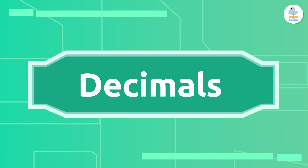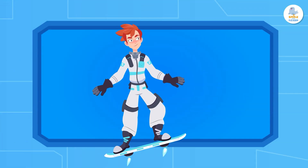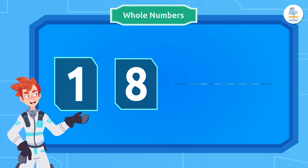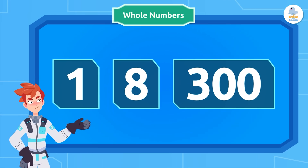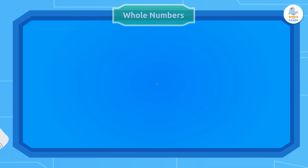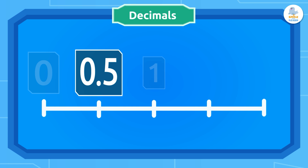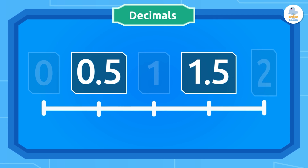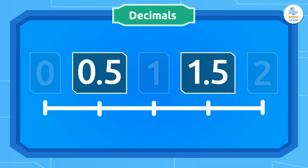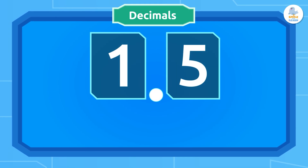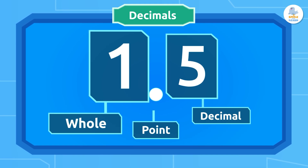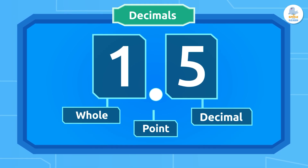Decimals are not whole numbers because they don't represent complete or exact quantities, like 1, 8, or 300. Decimals express quantities smaller than one unit, or values that are between two whole numbers. Decimals are made up of two parts: the whole part to the left of the decimal point, and the decimal part to the right of the decimal point.